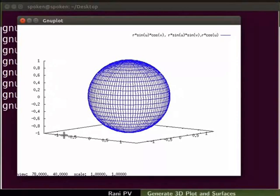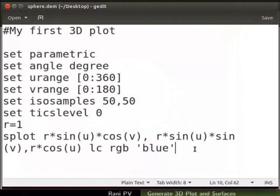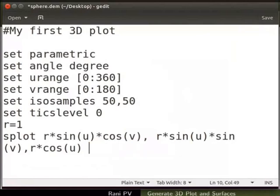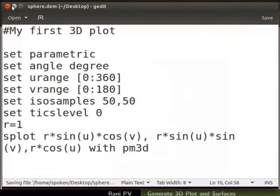Next, let's make a heatmap with pm3d command. Go back to the script in gedit to make changes in it. Delete the lc rgb blue in the splot command. Add with pm3d at the end of the line as seen on the screen. Save the script file, minimize gedit and go to GNUplot.